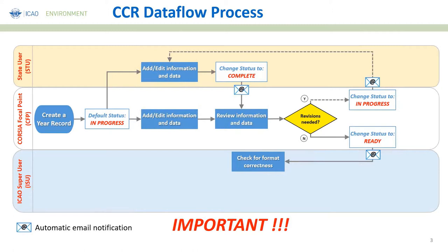The CCR has built-in business rules that check information. For example, CO2 emissions must be numbers — you cannot enter letters in a field that requires numbers. The CCR automatically detects this: if you accidentally put a letter instead of a zero, the system will give you an error message. However, there may be other mistakes the system does not detect, and this is where the ICAO super user comes in to check for format correctness.